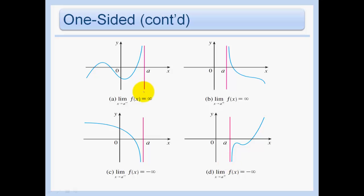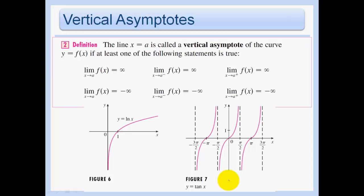In figure a, at x equals a — the red line is just for explanation — from the left side it's going to infinity, and we don't know what's happening from the right. In figure b, from the right it's going to infinity. In figure c, from the left it's going off to negative infinity. And in figure d, from the right we're going to negative infinity. When the limit as x approaches a equals infinity or negative infinity, we're essentially saying there's a vertical asymptote there.